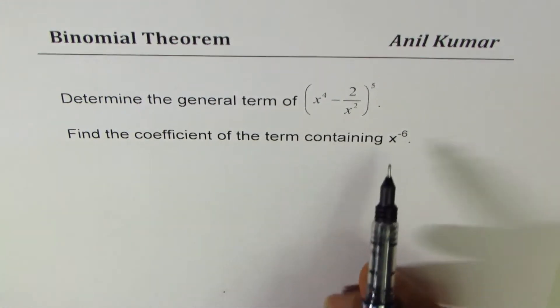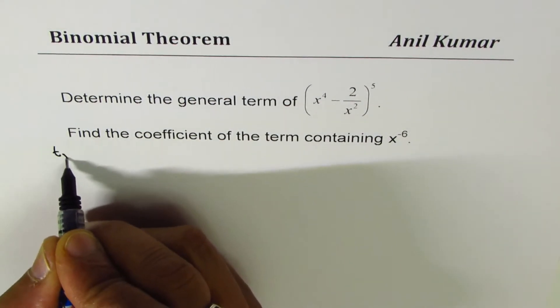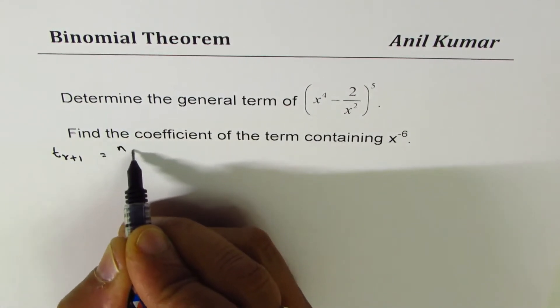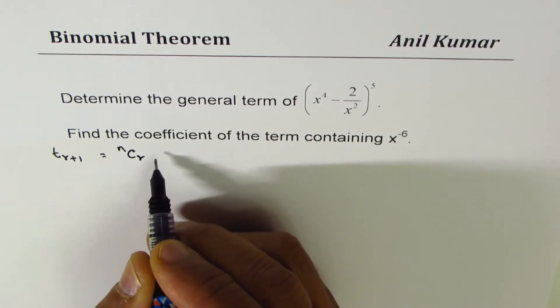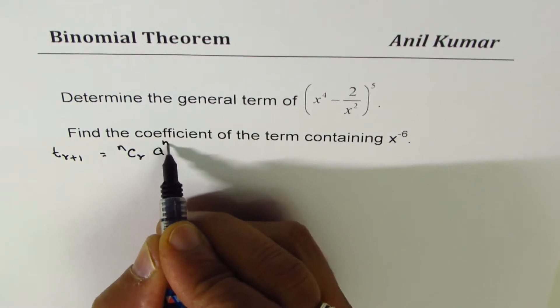The general term is normally written as T_{r+1} and is nCr. You may write like this also: a^(n-r) times b^r.